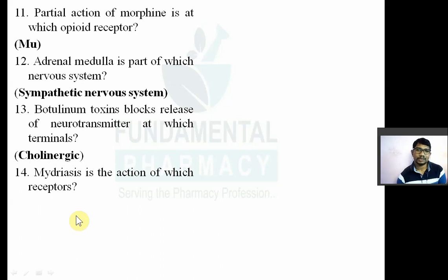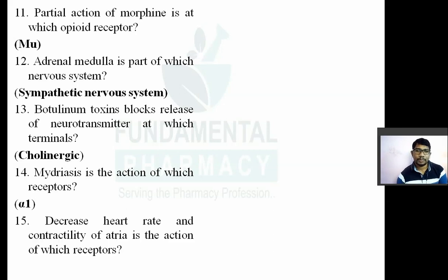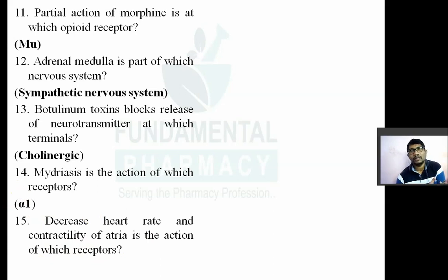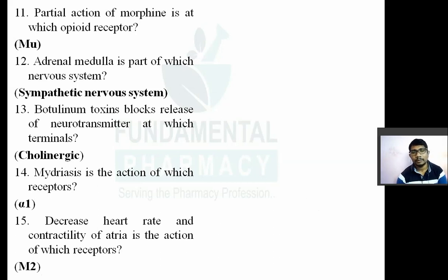Question fourteen: mydriasis is the action of which receptor? Mydriasis means pupil dilation. It is caused by alpha-1 adrenergic receptors present in the eyes. Question number fifteen: decrease in heart rate and conductivity of the atria is the action of which receptor? The answer is the muscarinic M2 receptor. Decrease in heart rate and conductivity of atria is the action of the muscarinic 2 receptor.